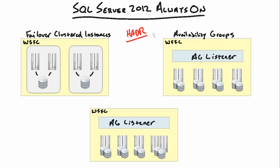Always On is SQL Server's new way to accomplish HADR — High Availability Disaster Recovery. It's really two distinctly separate technologies in one. On one side we have Failover Clustered Instances (FCIs), which gives us redundancy through multiple SQL instances. On the other side we have Availability Groups (AGs), which keeps our databases highly available through redundant copies spread across multiple servers.